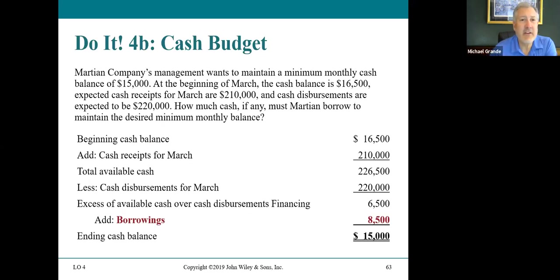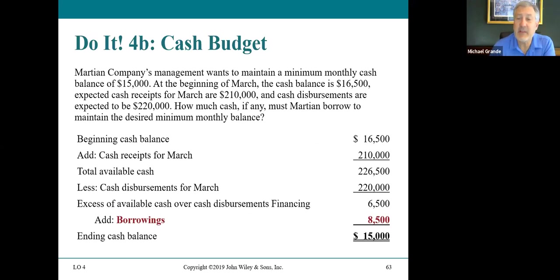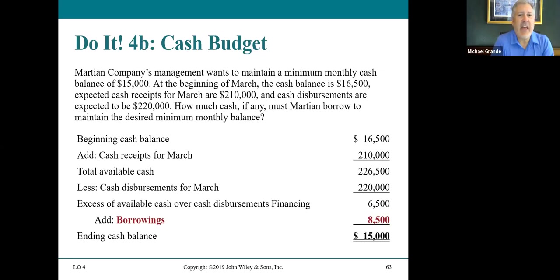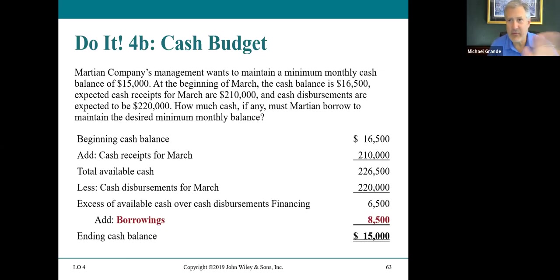Cash budget example: Martian Company management wants to maintain a minimum monthly cash balance of $15,000. At the beginning of March, the cash balance is $16,500; expected receipts are $210,000; disbursements are $220,000. How much cash must Martian borrow? Beginning cash balance $16,500, plus estimated collections $210,000, equals cash available $226,500, minus disbursements $220,000, leaves an estimated excess of $6,500. But they need $15,000 minimum, so they must borrow $8,500.